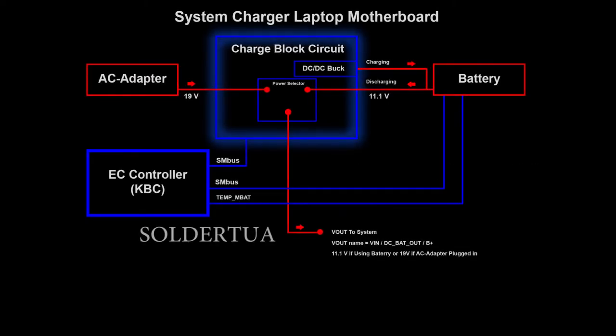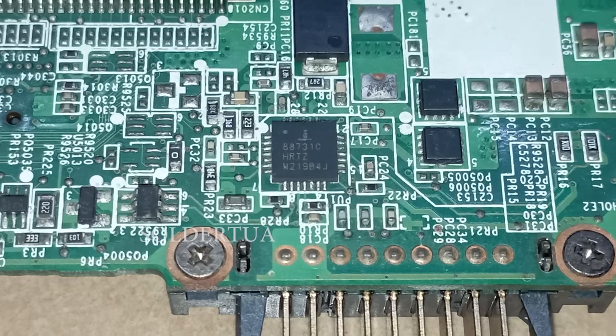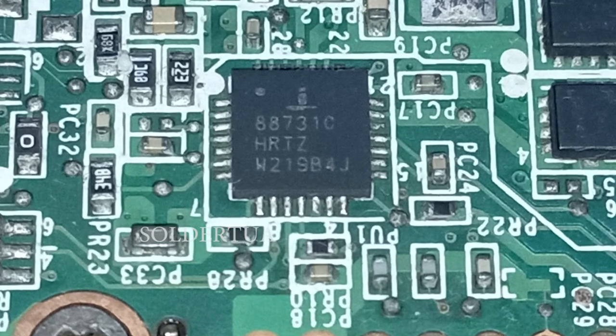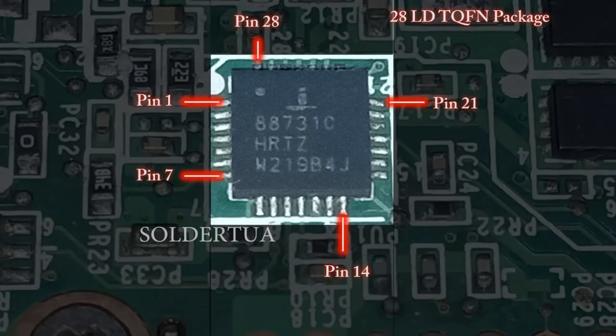Who regulates the transfer of the power source between the AC adapter and the battery? The answer is a charger block circuit, which is controlled by a Charger Controller IC. In this video we use the ISL88731C Charger IC as an example. The ISL88731C IC has 28 pins and a 28LD TQFN package.